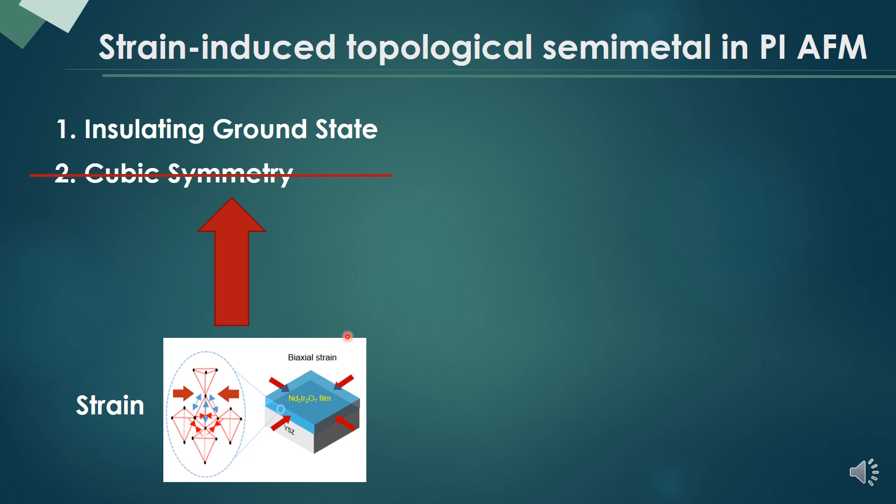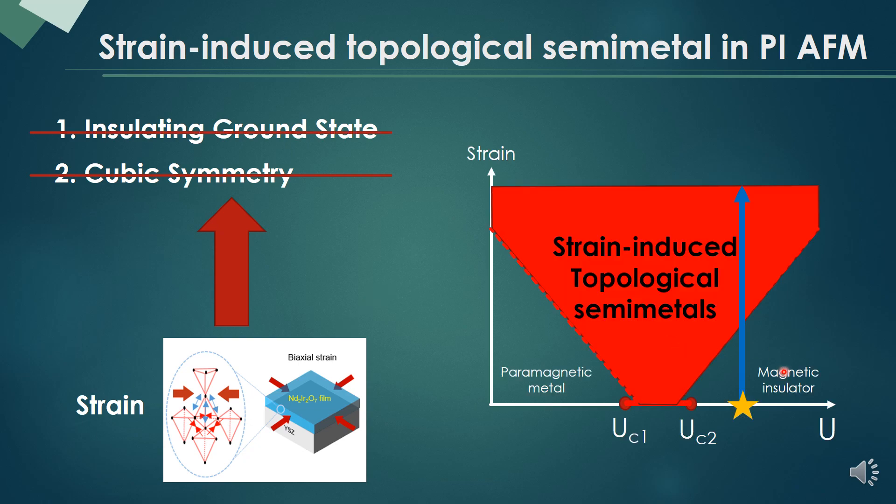Furthermore, by strain, the magnetic structure changes. Therefore, we can reduce the window of the insulating ground state and widen up the window for topological semimetals.